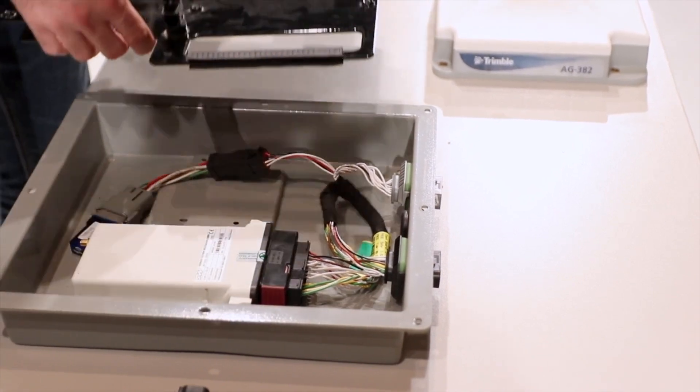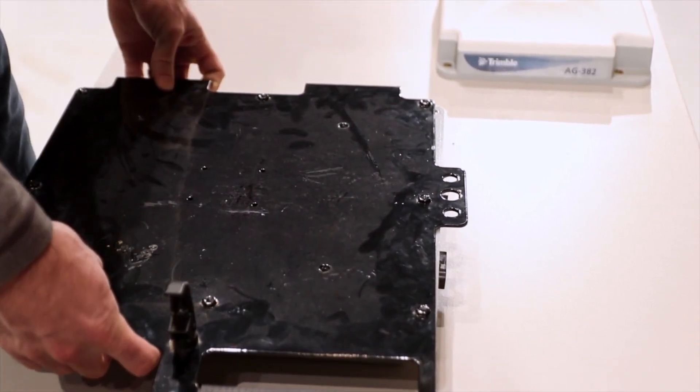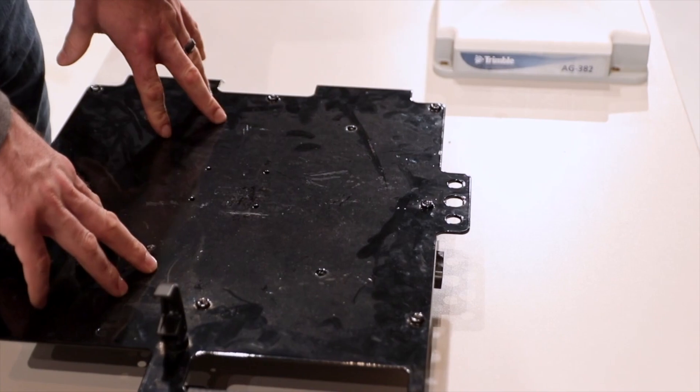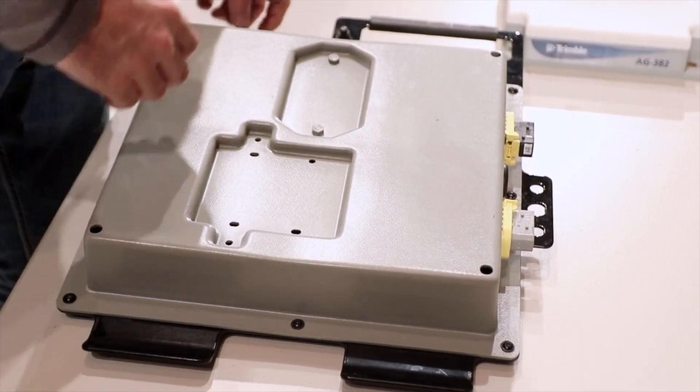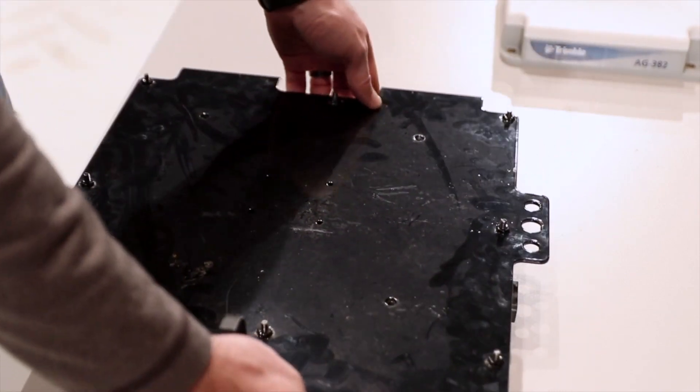We'll go ahead and put this bracket back on and install the screws that we mentioned earlier to make this one unit. Now that we've finished putting this together, we're going to flip it back over and install the receiver.